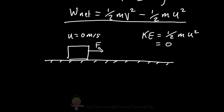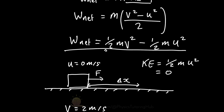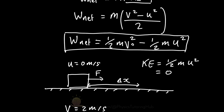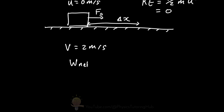After being pushed by a constant force over a distance delta x, the block increases its velocity to v, say 2 meters per second. The net work done on this block is a positive value, because the initial kinetic energy term is zero and we only have the positive final kinetic energy term. Our force has provided kinetic energy to the system.